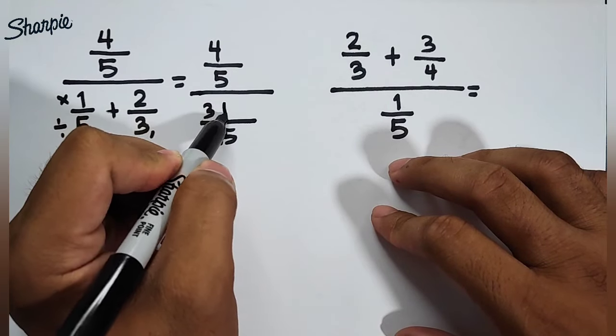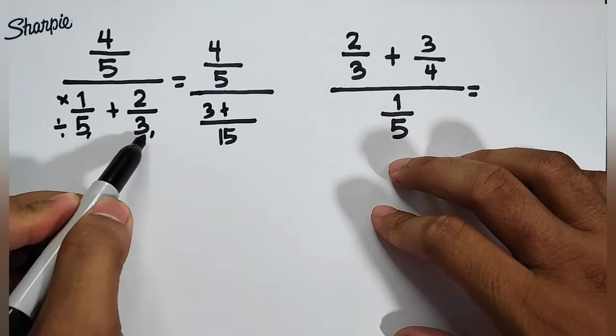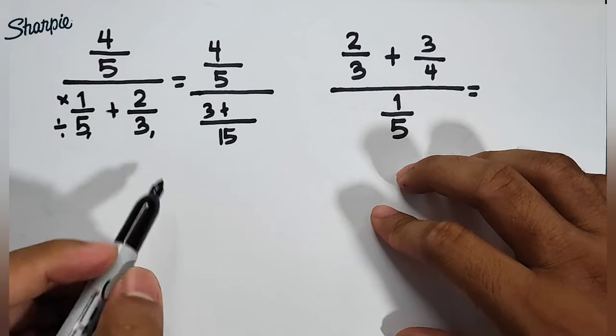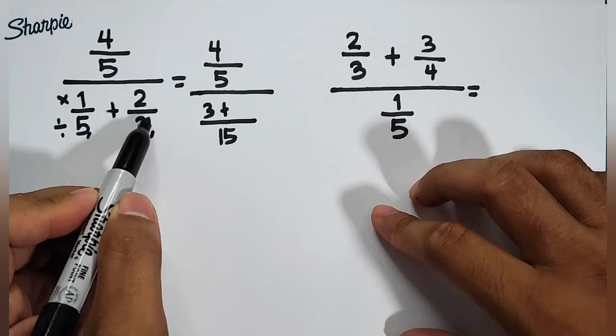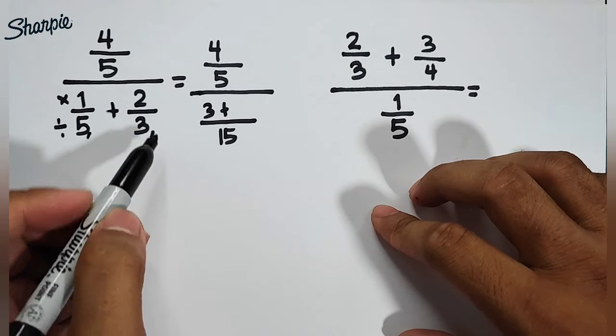Then copy, addition. For the next fraction, we have 15 divided by 3, that is equal to 5, times 2. That would give us the answer of 10.